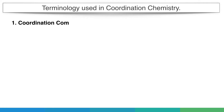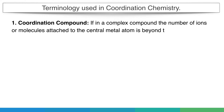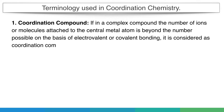First is the coordination compound itself. If in a complex compound, the number of ions or molecules attached to the central metal atom is beyond the number possible on the basis of electrovalent or covalent bonding, it is considered a coordination compound. In other words, the number of bonds formed in a complex is beyond the number possible by ionic or covalent theory.